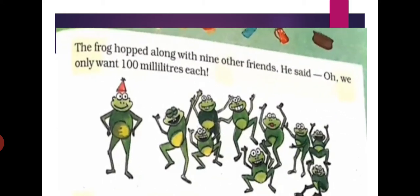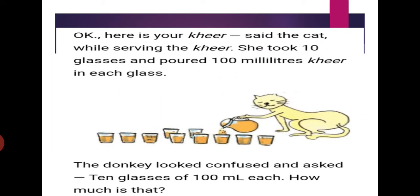The frog hopped along with 9 other friends and said: we only want 100 millilitres each. So we can see 10 frogs — they all came to the function and asked for 100 millilitres each. Each frog needs only 100 millilitres of Kheer. The cat said: Here is your Kheer. While serving the Kheer, she took 10 glasses and poured 100 millilitres of Kheer in each glass.